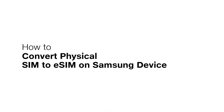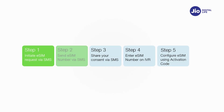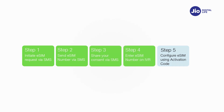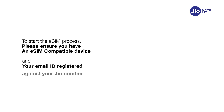Convert your physical SIM to eSIM for Samsung device in 5 easy steps. Please note, it is mandatory to complete all 5 steps to activate eSIM on Samsung device. Please don't skip or avoid any step. To start the eSIM process, please ensure you have an eSIM compatible device and your email ID is registered for your GEO number.